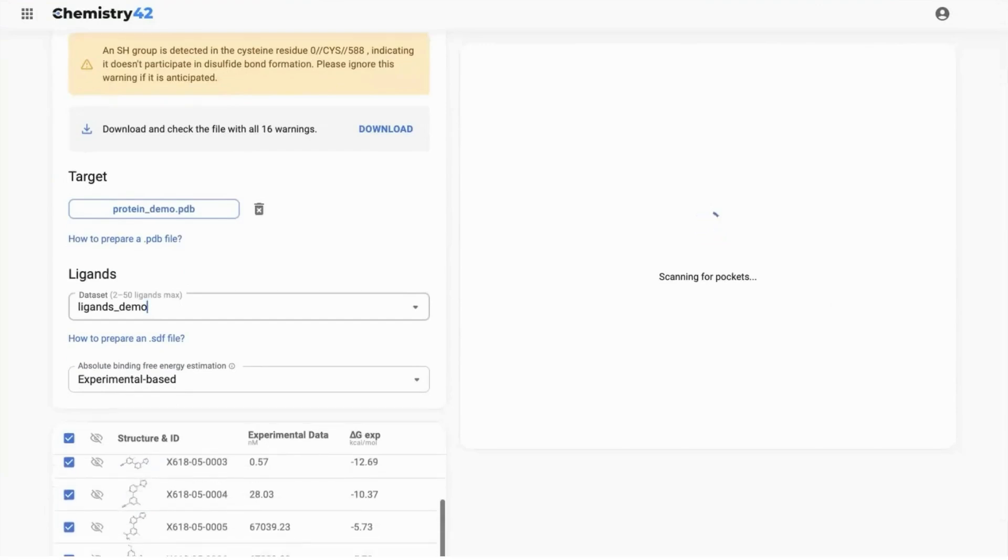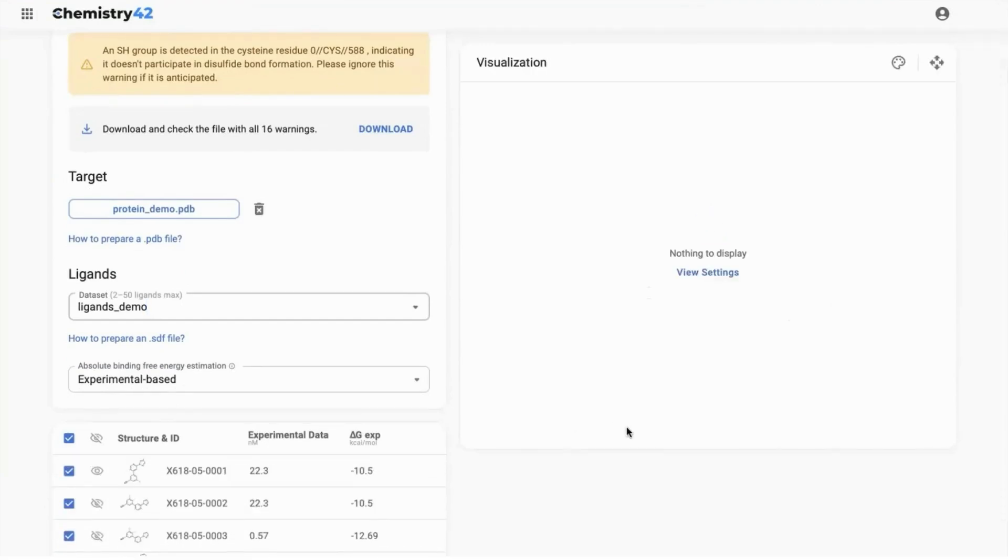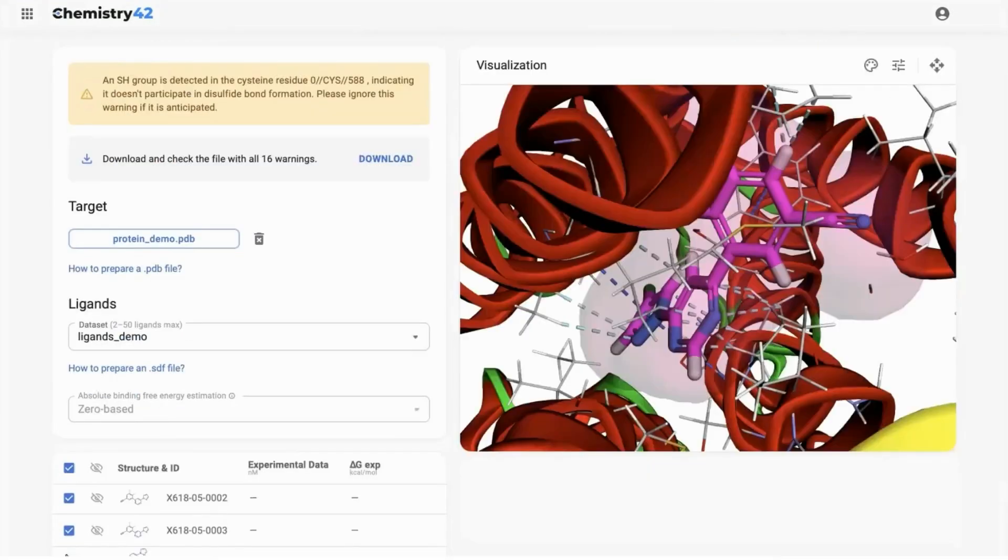After the pocket is uploaded, you may vary the visibility of the ligands in the 3D structure and select the ones you would like to calculate delta G for. Now we can run the calculations.